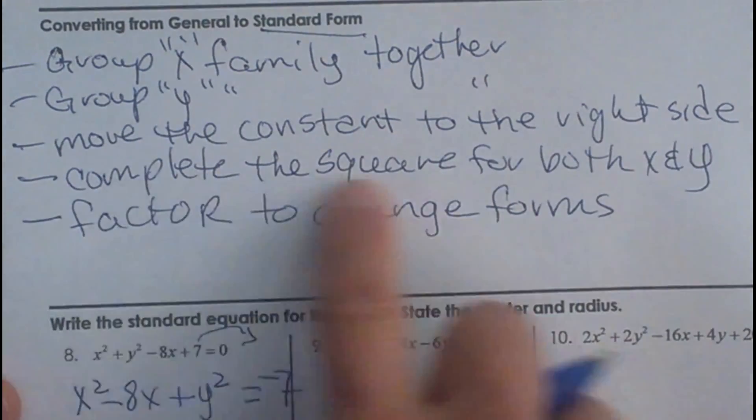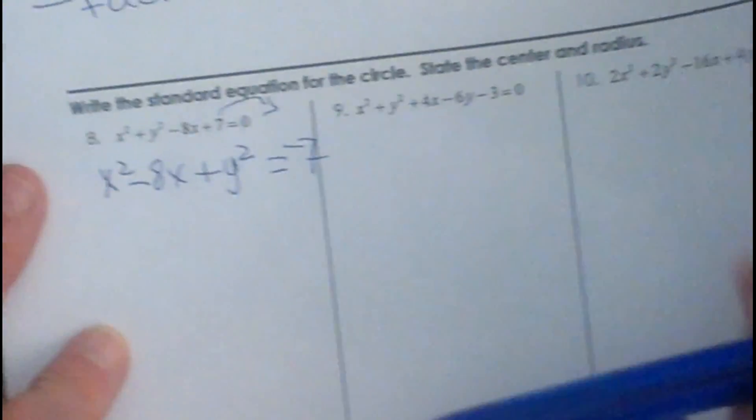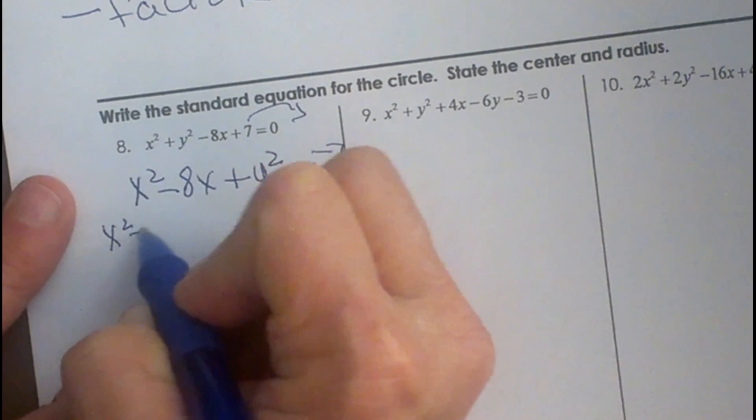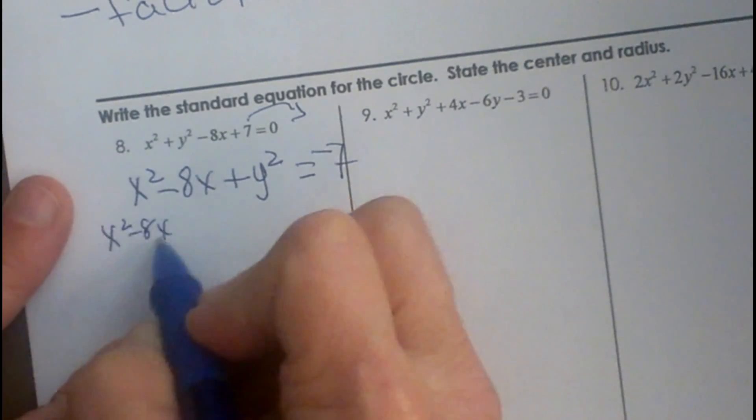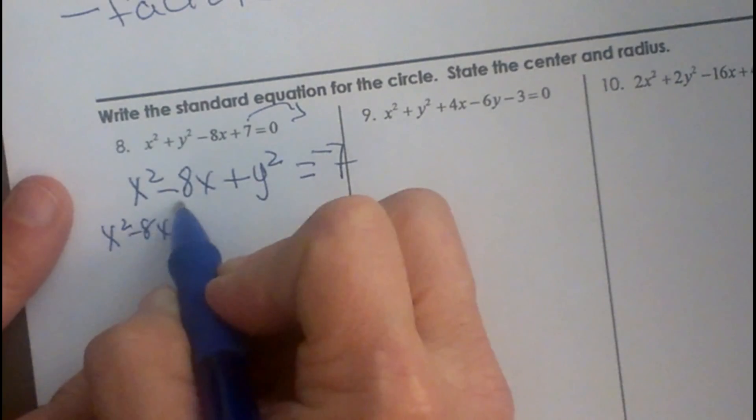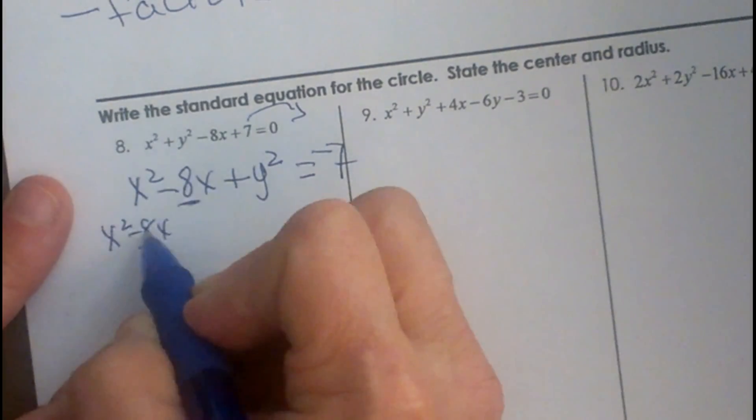Now I need to complete the square for both x and y. So let's look at how to complete the square. Hopefully you learned how to do this. But what you want to do is you want to take the middle term or the 8 that is the coefficient in front of the x term and you want to half it and square it.